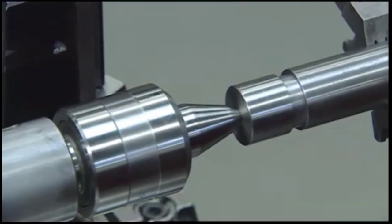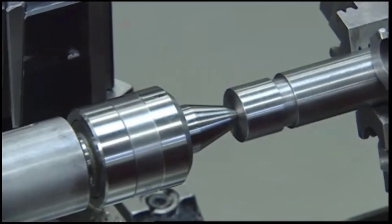When performing knurling on a lathe, the work can be held in a chuck, collet, or between centers.